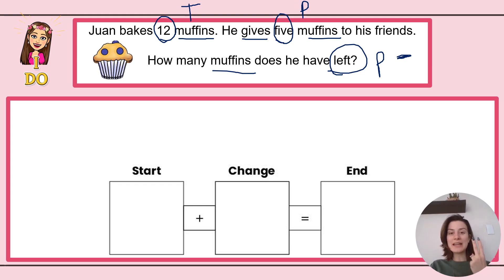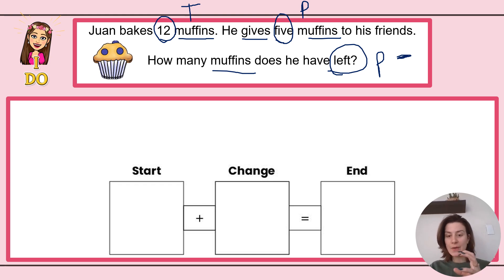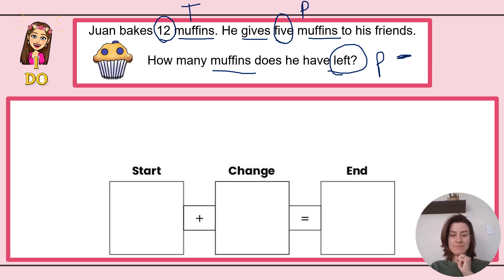We can move on to Step 2: plan it, where we choose a strategy to help us solve. I am going to use the number sentence — the Start-Change-End method — to solve. This is how you draw it: square minus square equals square. Start, Change, End is labeled. We start with an amount, we're changing something about that amount, and we're ending with something else. I need to make a quick change here — I'm not going to be adding, we decided we are subtracting, so I put my subtraction symbol there.